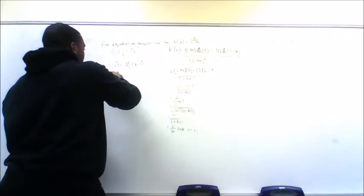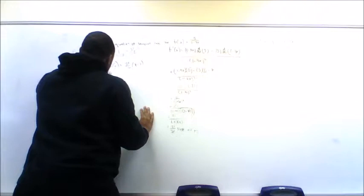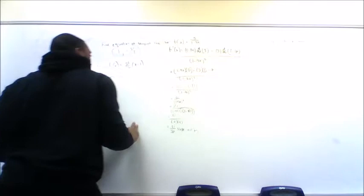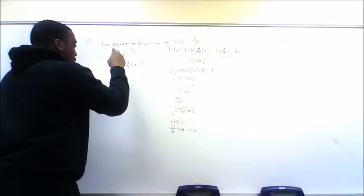Substitute and simplify: the two negatives give y plus 1 half, so I subtract 1 half from both sides, and I'm left with y equals 21 over 36 times x, minus 21 over 36. Subtracting the 1 half — we know that 1 half equals 18 over 36 — so negative 21 minus 18 over 36 ends up reducing to negative 13 over 12.